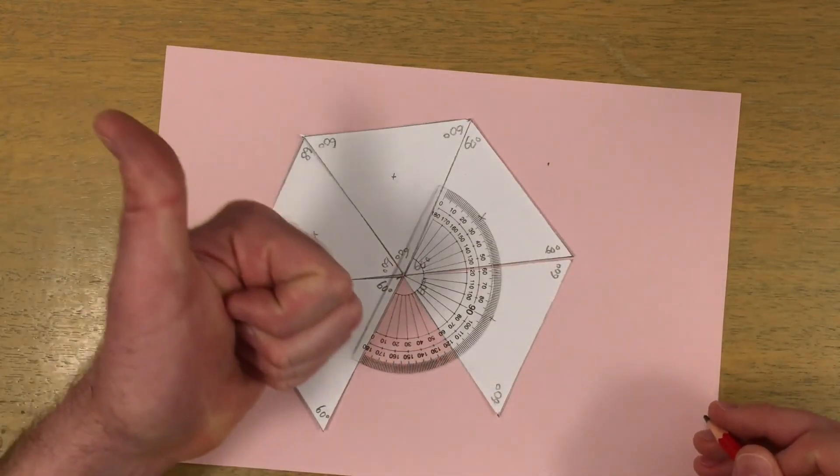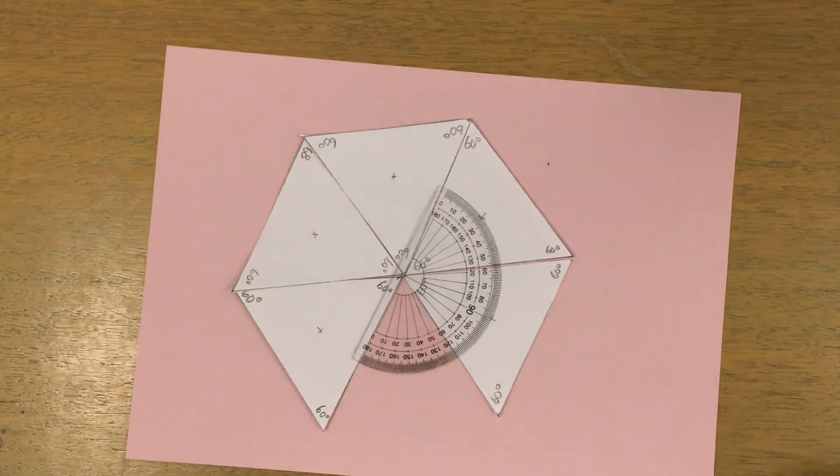In this case, regular triangles do tessellate. In fact, any triangles will tessellate.